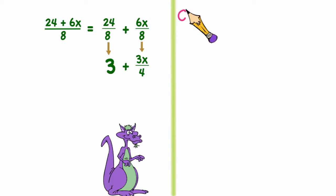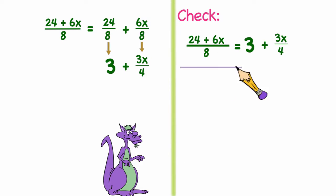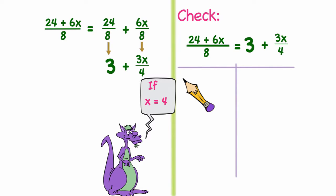If I wanted to check to make sure those two expressions were equal I simply need to pick a value for x. In this case I'm going to pick 4 because that will make my math easy. So if I substitute 4 into 24 plus 6x over 8 I get 24 plus 24 over 8 or 48 over 8 which reduces to 6.